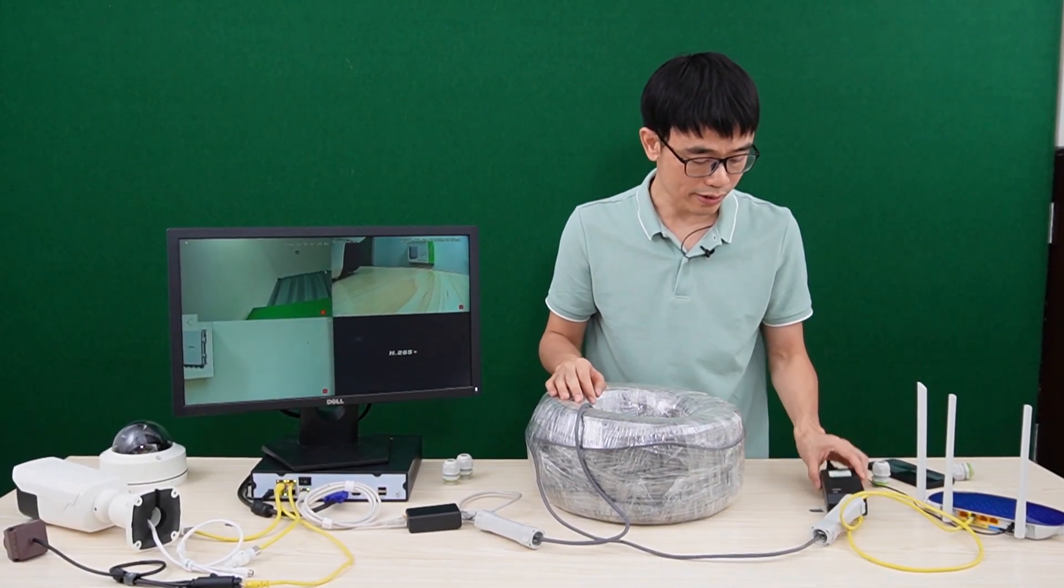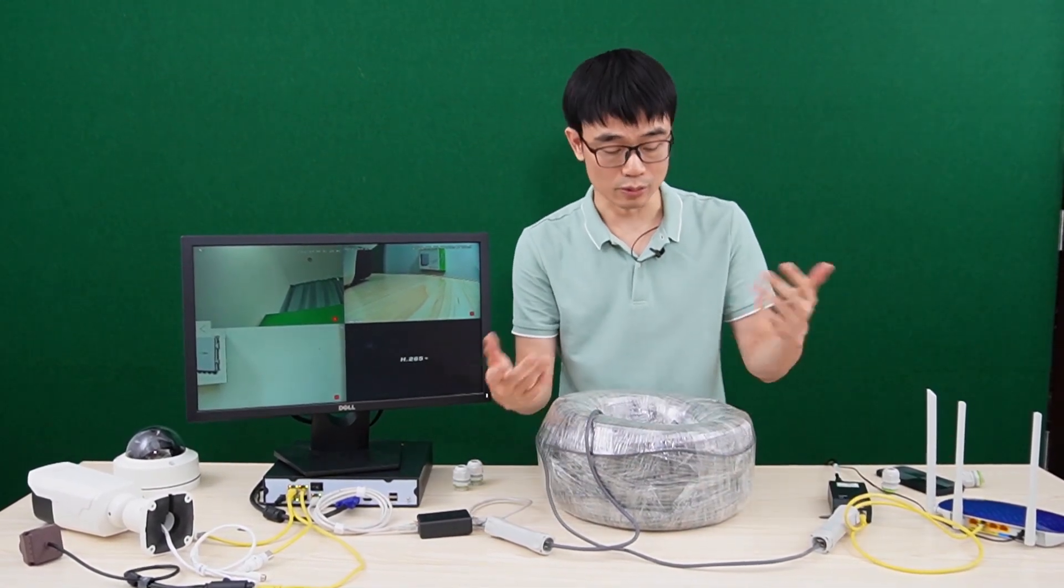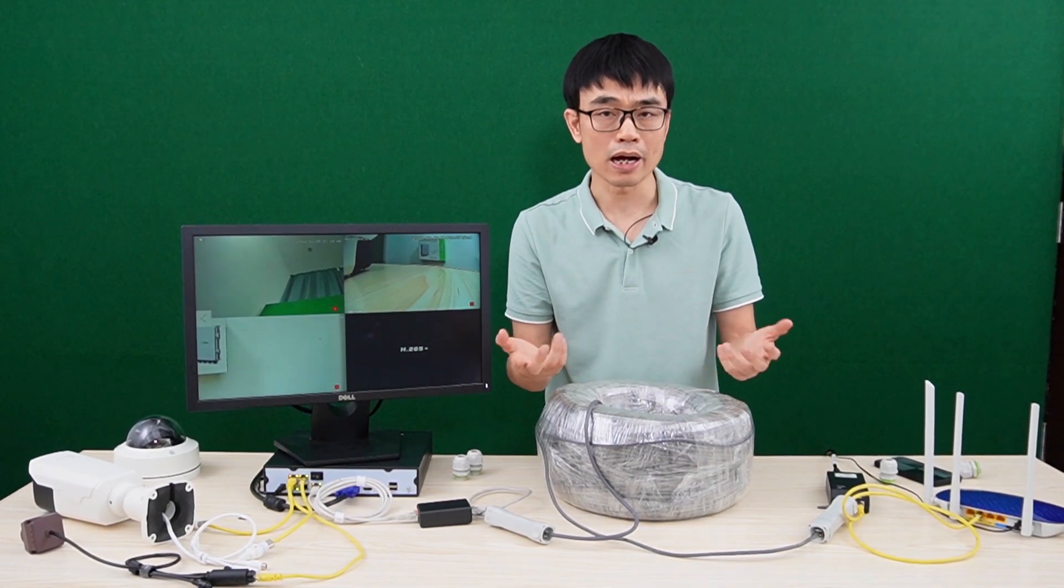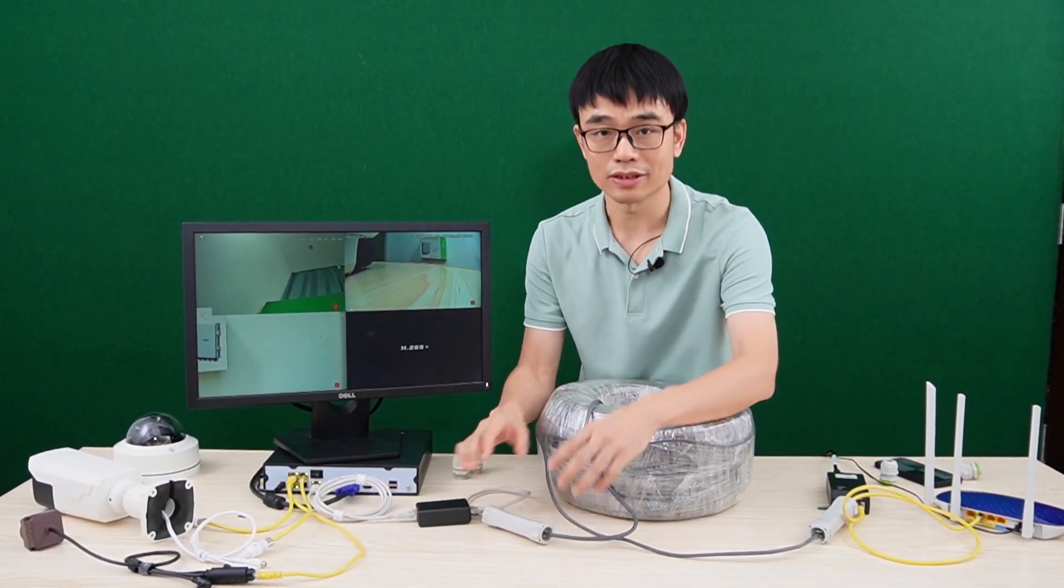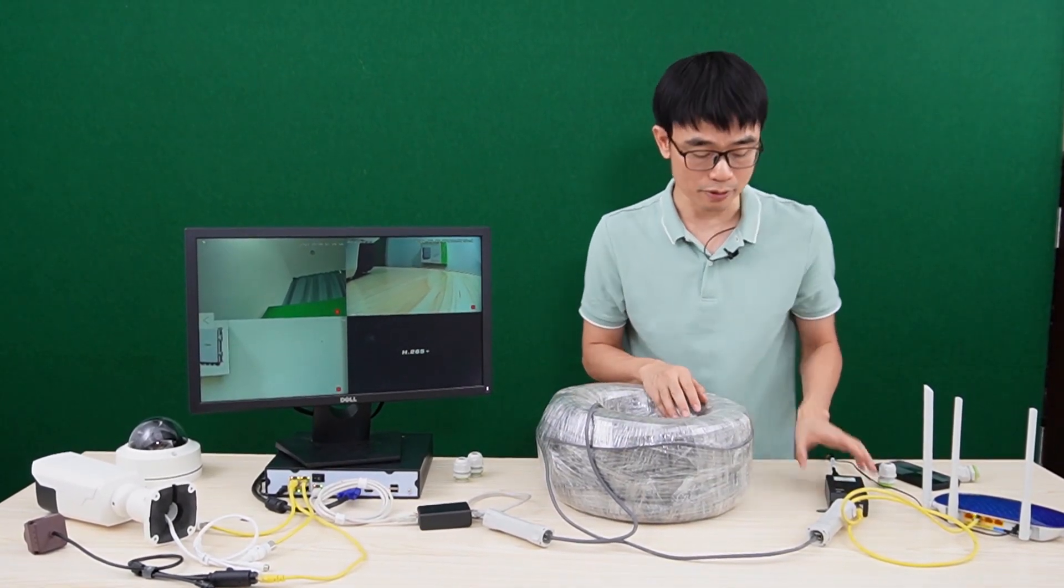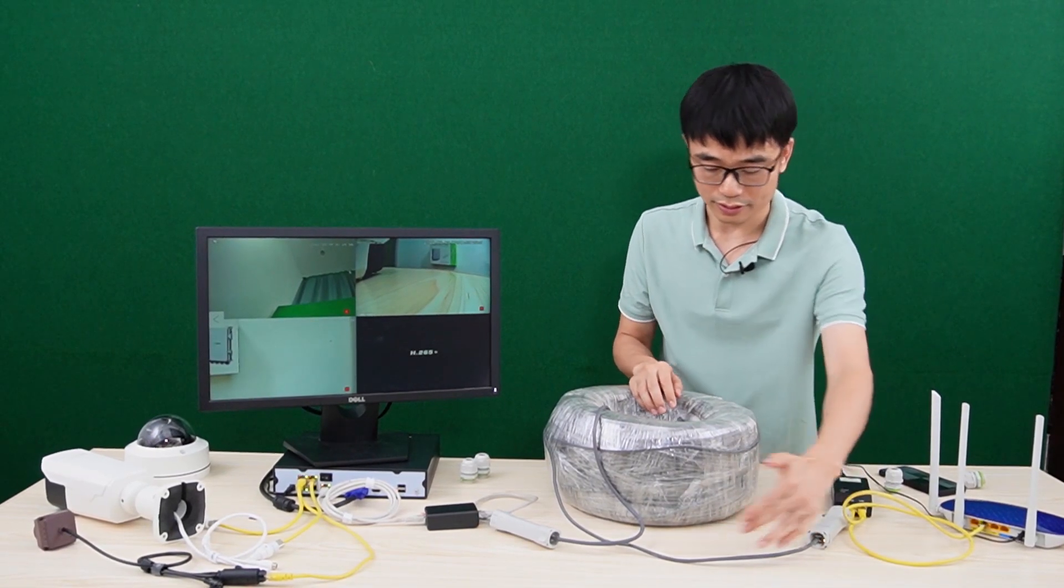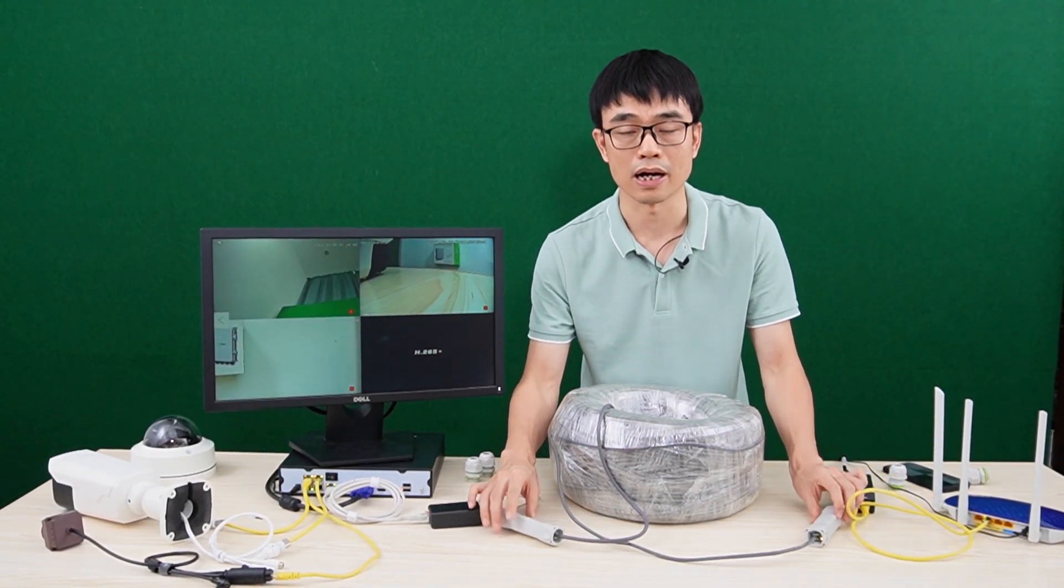Now let's explain why we need this PoE injector. You see, this device is a PoE extender. It's an electronic device. It needs power. And we don't want to use any external power source. So we want to send the power through the cable. This is the PoE injector that will inject the power to this Ethernet cable. So both these two devices will get the power.